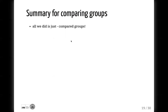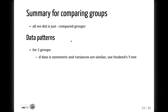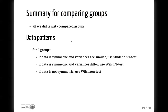Let's have a small summary for group comparison. All we did is compare groups — no matter how fancy the statistical tests sound, ANOVA, Kruskal-Wallis, all they do is compare groups. For two groups: if the data is symmetric or normally distributed and variances are similar, use Student's t-test. If normally distributed but variances differ, use Welch t-test. And if the data is not normally distributed, the variance doesn't matter — use the appropriate non-parametric test.